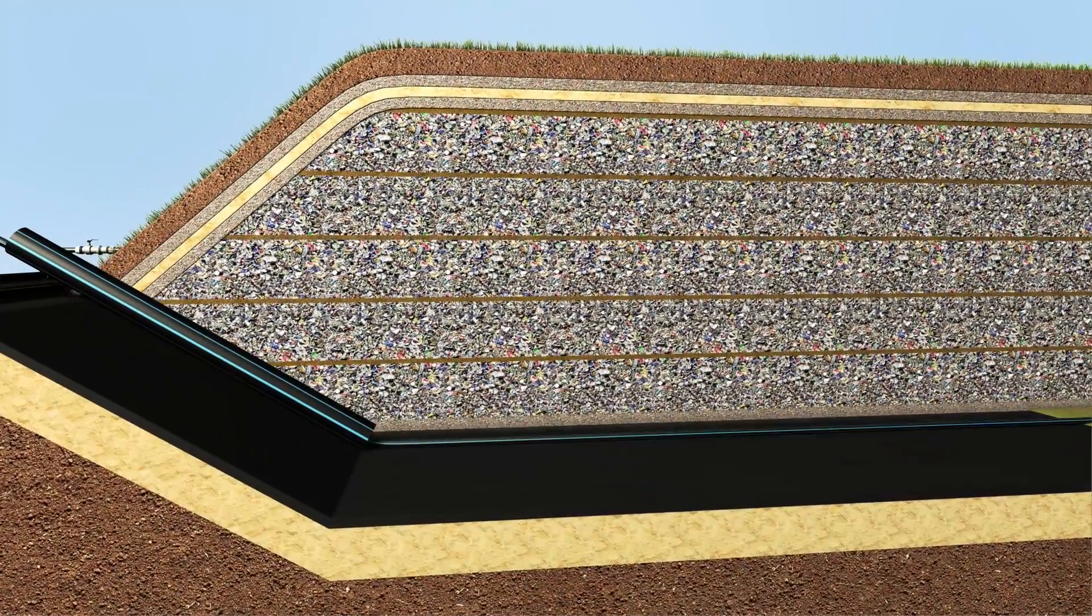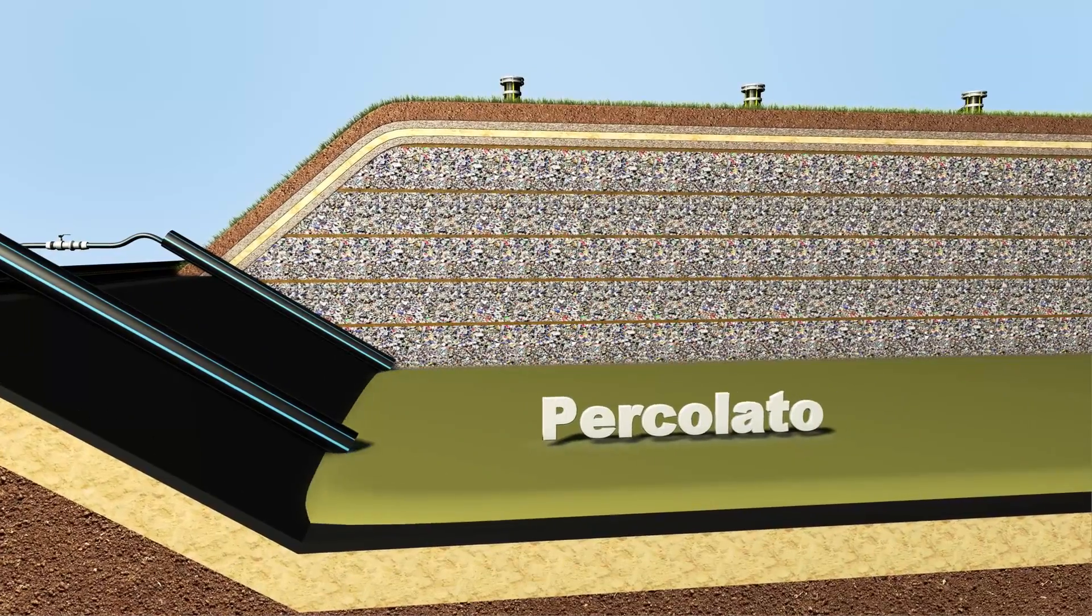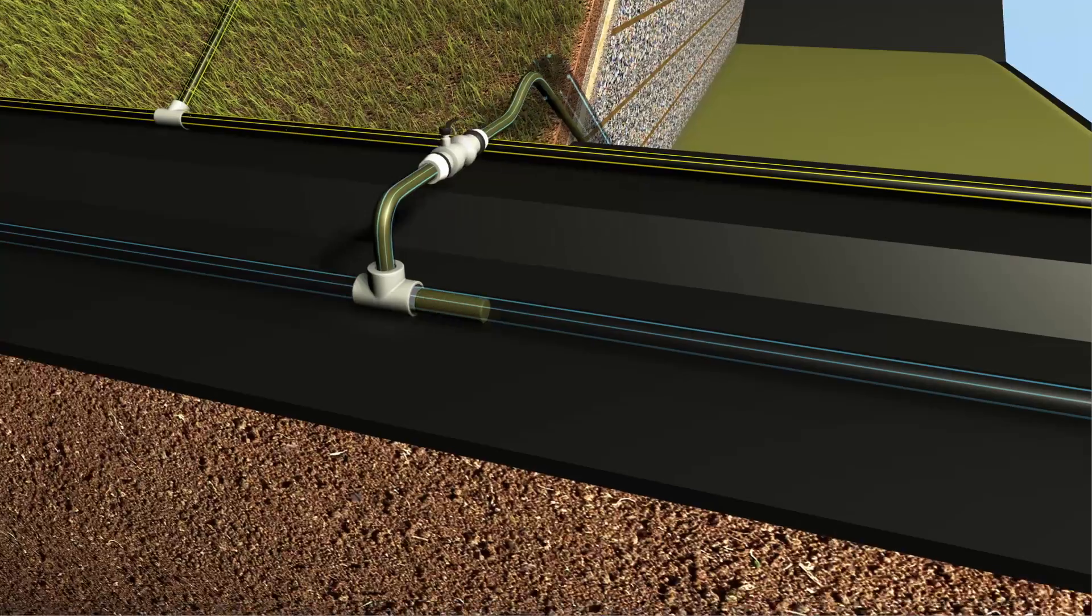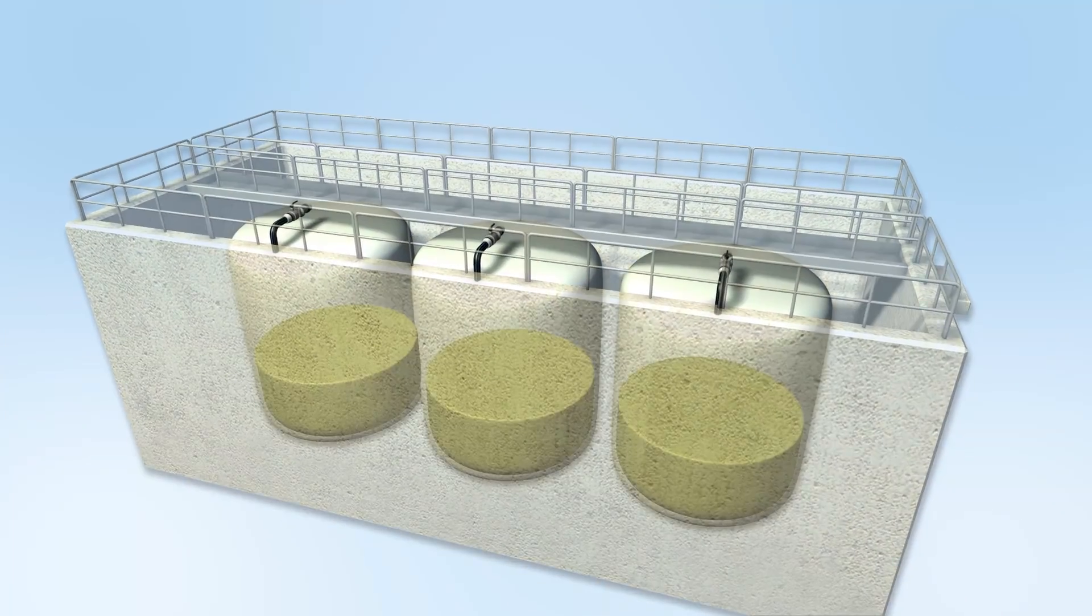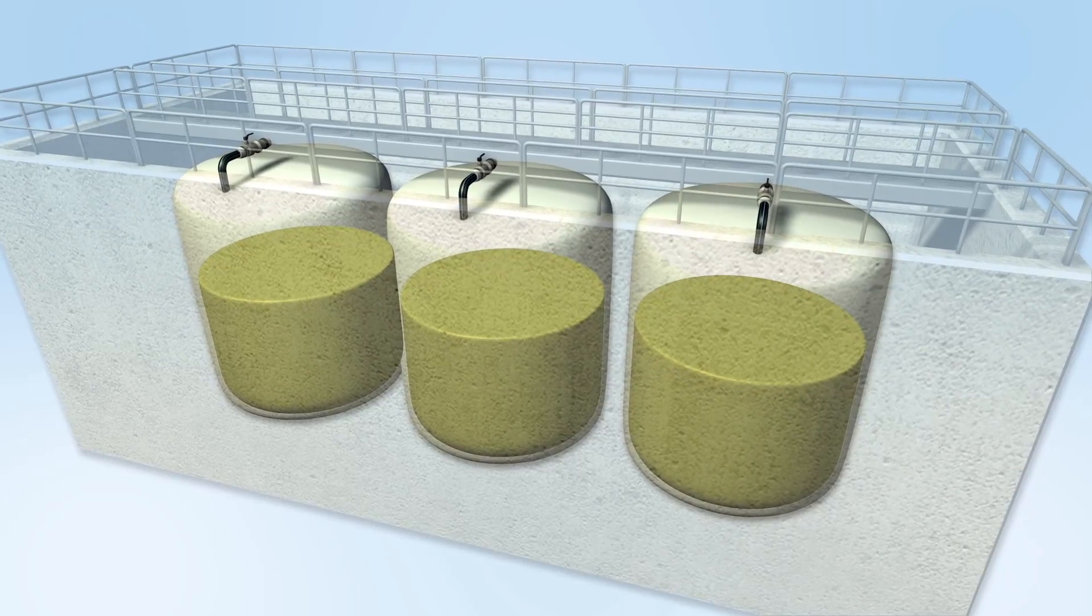But what is the BioLiar innovation? First of all, the leachate produced by the landfill is reused to increase waste moisture. That's useful to speed up waste biodegradation, which shows higher performance in a wet environment.